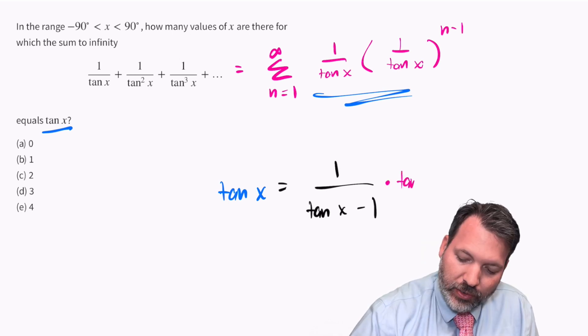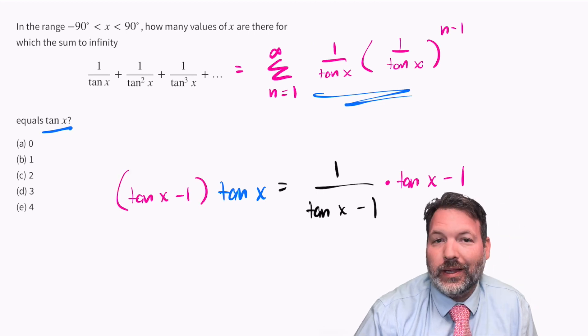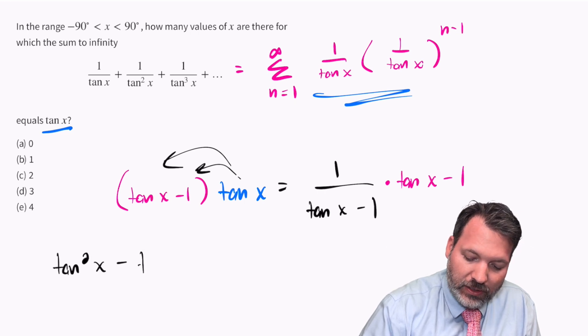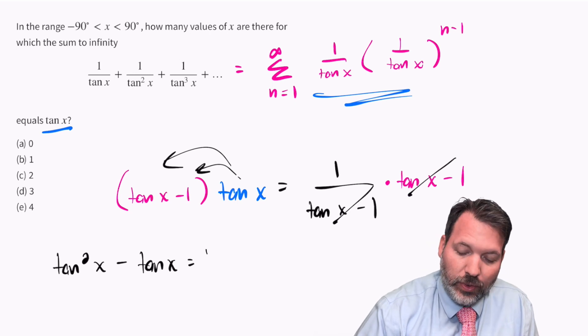If we multiply both sides here by tangent x minus one, we're going to end up with something that looks an awful lot like a quadratic. Specifically, as we distribute here, we get tangent squared x minus tangent x. And on the other side, as these two expressions cancel out, we get one.